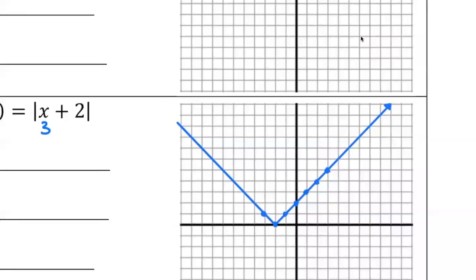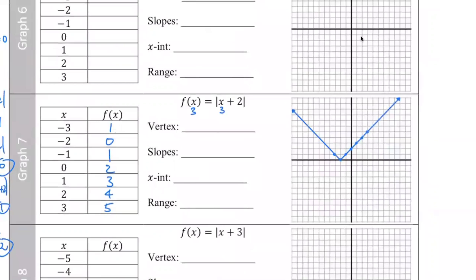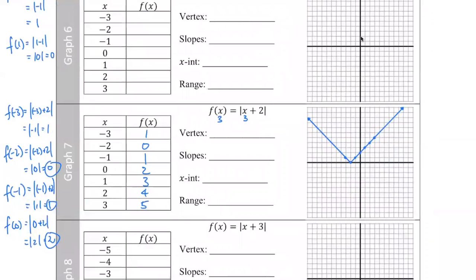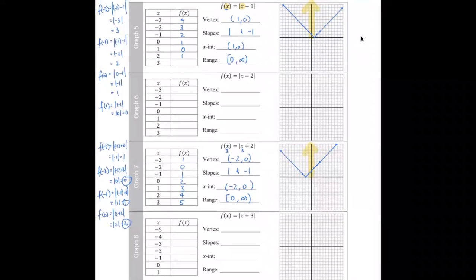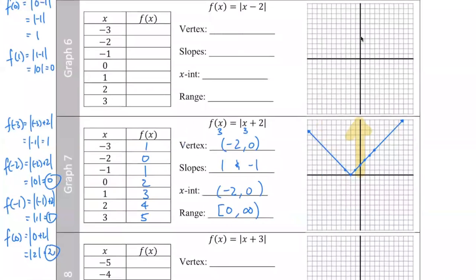The vertex is at negative two comma zero. The slopes are still one and negative one. The x-intercept is the same as the vertex — it touches the x-axis at that point. The range covers from y equals zero to y equals infinity, so the range is zero to infinity. Simple substitution, plotting the dots, and showing the V-shaped graph — that's all.